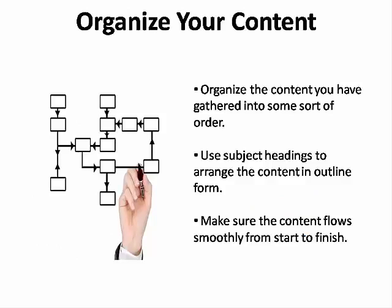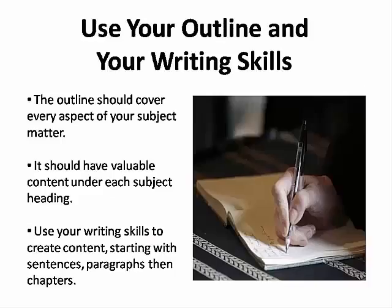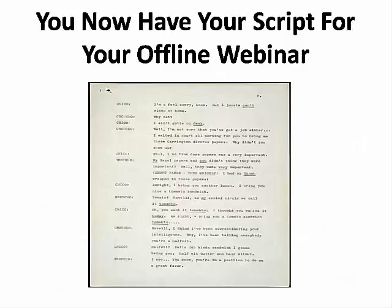Once you're satisfied that you have a lot of information, spend some time organizing the content into some sort of order. This is where the subject headings come into play — think of them as chapter headings, then arrange the content into an outline form. Take your time and make sure that it flows from start to finish. Finally, once you have an outline that covers every aspect of your subject matter and has valuable content under each subject heading, use your writing skills to tease the content out into complete sentences, combining the sentences into paragraphs and the paragraphs into chapters. When you're done, you have the script for your offline webinar.